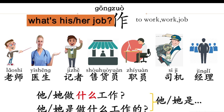How to answer? You answer like: 他是... For example: 他做什么工作? 他是做什么工作的? 他是老师. 他做什么工作? 他是做什么工作的? 他是医生. 他做什么工作? 他是做什么工作的? 他是记者.